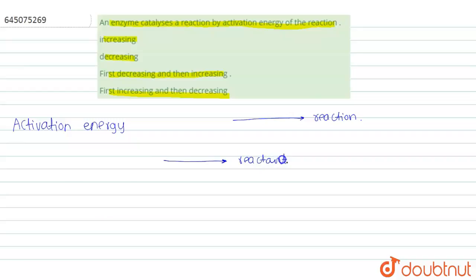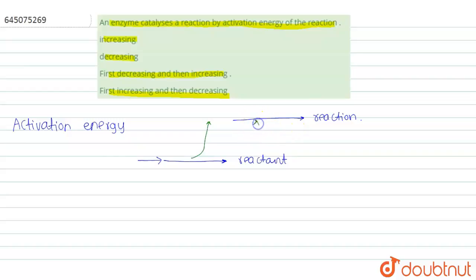The energy in the reactant is only this much, so normally we have to provide some energy to the reactant so that the energy of the reactants reaches that required for the reaction to proceed. The energy difference between the energy of the reactant and the energy required to perform the reaction is known as activation energy.